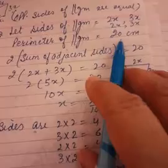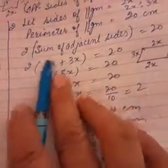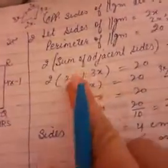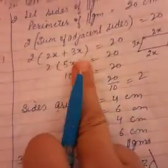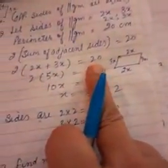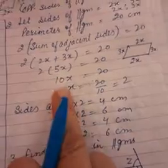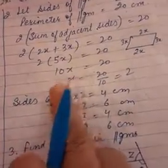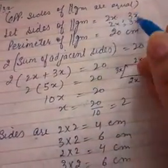Now the perimeter of the parallelogram is given as 20 cm. So what will be the formula here? 2 into sum of adjacent sides - this is the rectangle's formula: 2 into length plus breadth. Similarly, here it's the sum of adjacent sides. 2 times (2x plus 3x) equals 20. 2x plus 3x is 5x, multiply by 2 gives 10x. To find x's value, 10 will divide, so x equals 2. We substitute this in the sides we initially assumed.